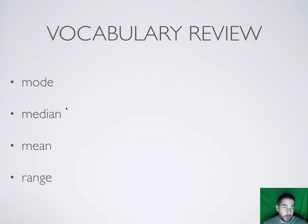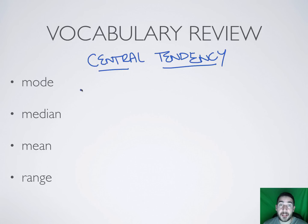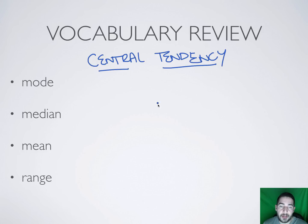Moving on — these are called measures of central tendency. You need to remember that term because you're probably going to get questioned on it. Whenever you see 'central tendency,' you're talking about the three M's: mean, median, and mode. Basically, all of these tell you where the midpoint should be, where the middle group should be.